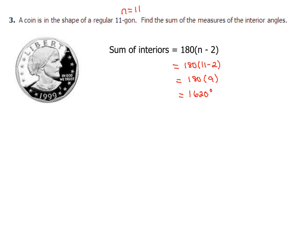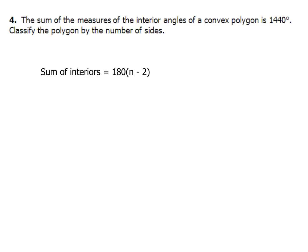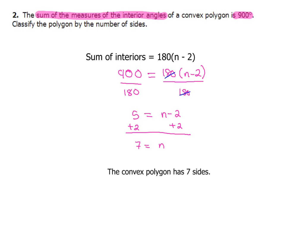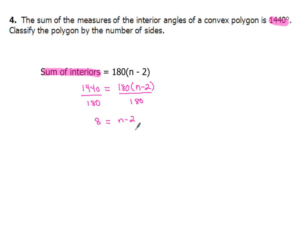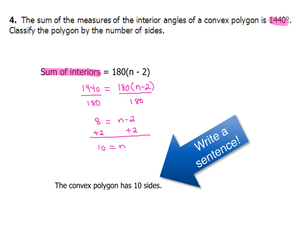Example four is a lot like example two. The sum of the measures of the interior angles of a convex polygon is 1,440 degrees — classify the polygon by its number of sides. We substitute: 1440 = 180(n − 2). Dividing both sides by 180 gives 8 = n − 2, then adding 2 to both sides gives n = 10. The convex polygon has 10 sides.